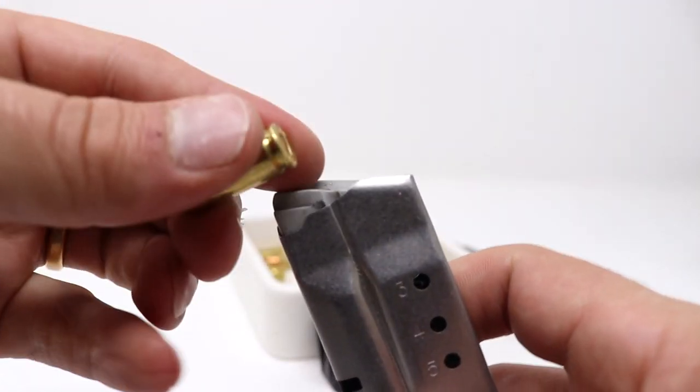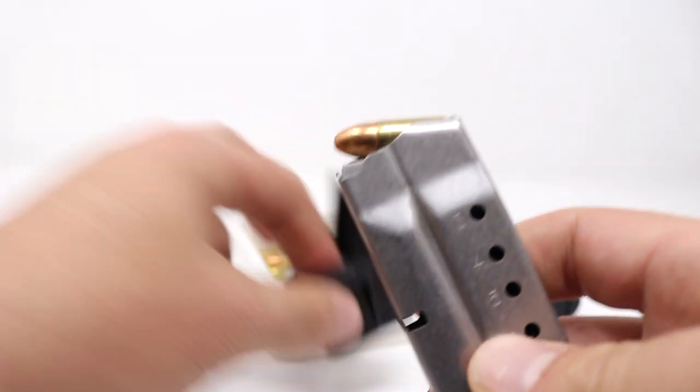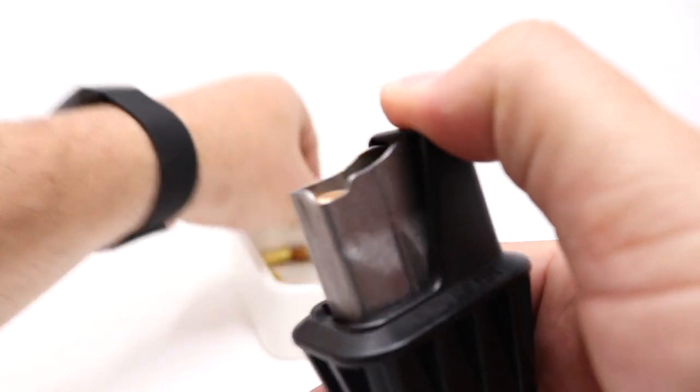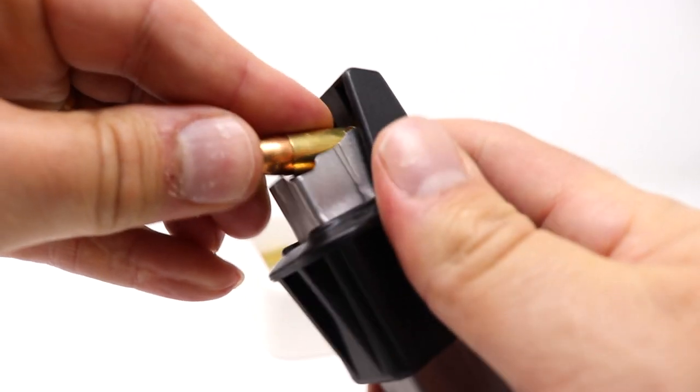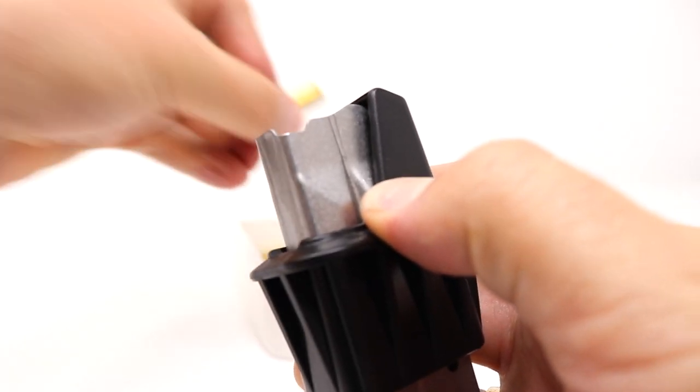To get started, simply put one round in and then place the loader on top. And each subsequent round, you're just going to depress, slide it in, lift the loader up, and it's super easy.